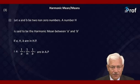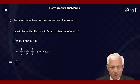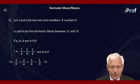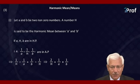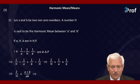Therefore, the condition gives us one upon H minus one upon A equals one upon B minus one upon H, which implies two upon H equals one upon A plus one upon B, or two upon H equals A plus B upon AB. Therefore, H equals two AB upon A plus B. We remember this as the harmonic mean between A and B.